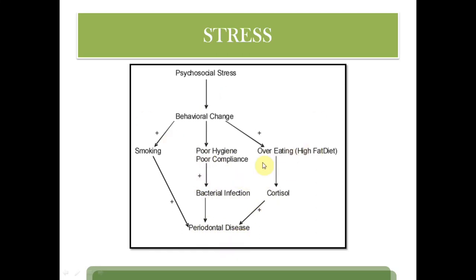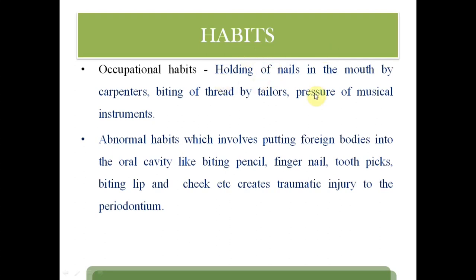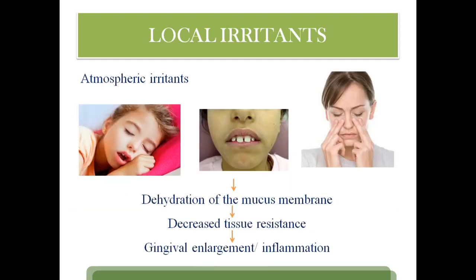Habits like occupational habits include holding nails in the mouth for carpenters and tailors, and other musical instruments — all are detrimental to periodontal structures. Nail biting, fingernails, toothpicks, and lip biting all cause structural damage to the periodontium. Local irritants such as faulty toothbrushing, faulty restorations, and orthodontic treatment can also cause damage. A mouth-breathing habit causes dehydration of the mucous membrane, decreased tissue resistance, gingival enlargement, and inflammation.